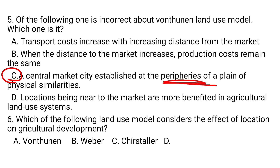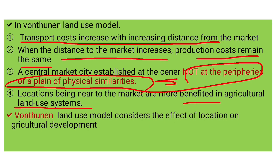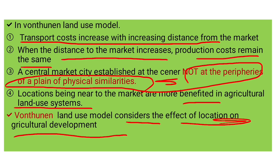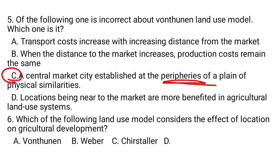Question number six: Which of the following land use models considers the effect of location on agricultural development? A) Von Thünen, B) Weber, C) Christaller, D) Thomas Malthus. Von Thünen's land use model considers the effect of location on agricultural development. The answer is A.